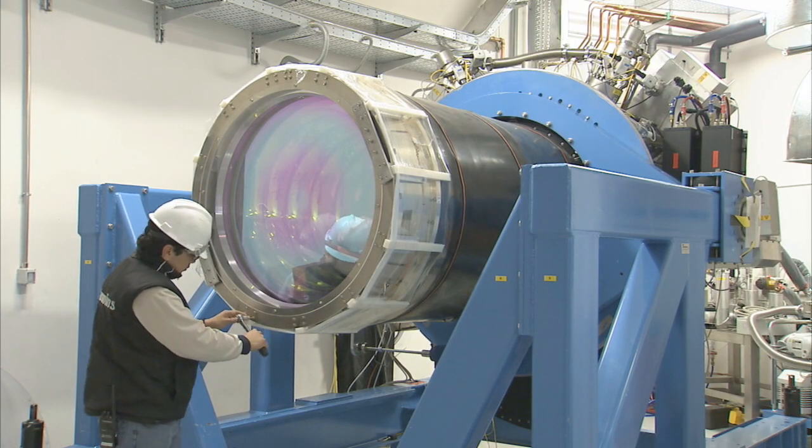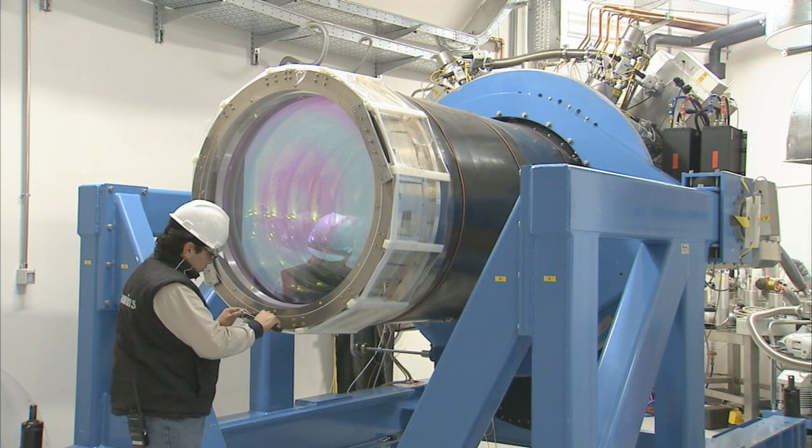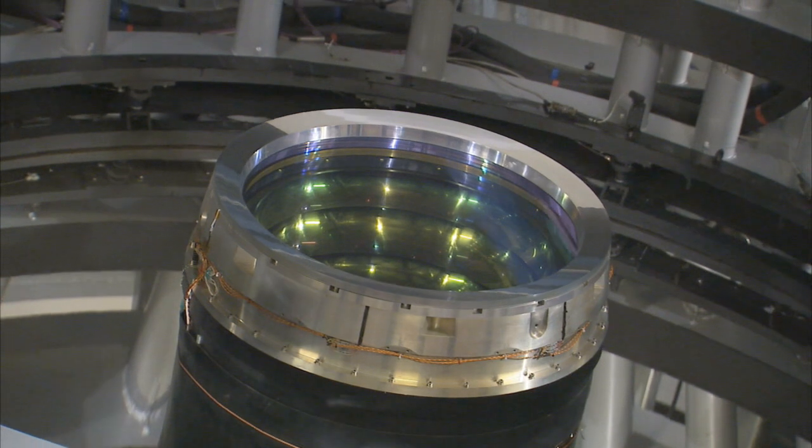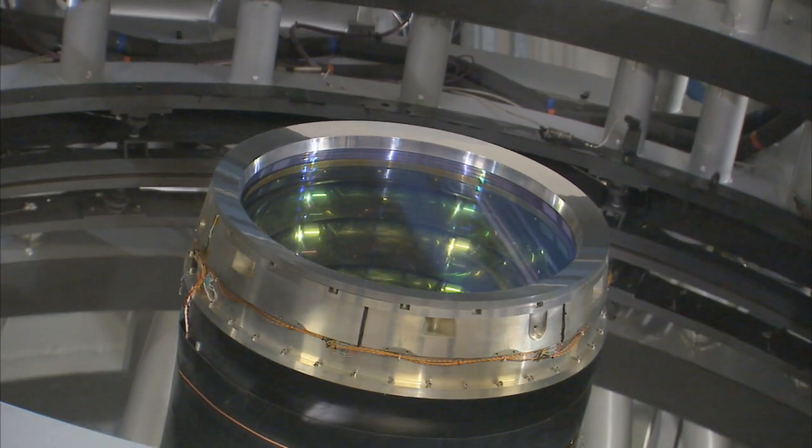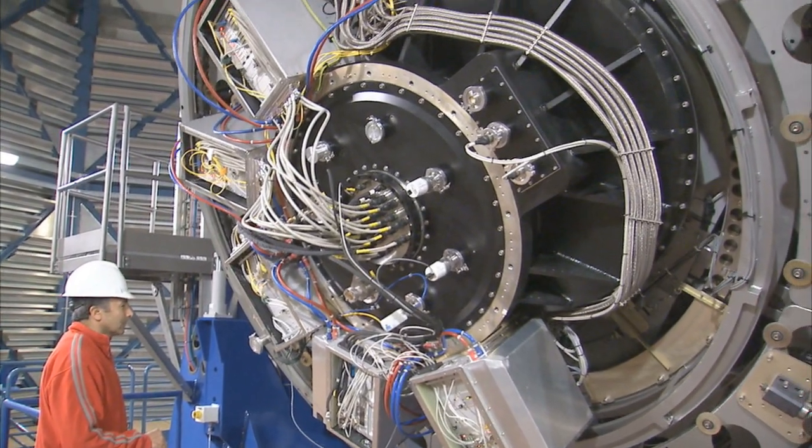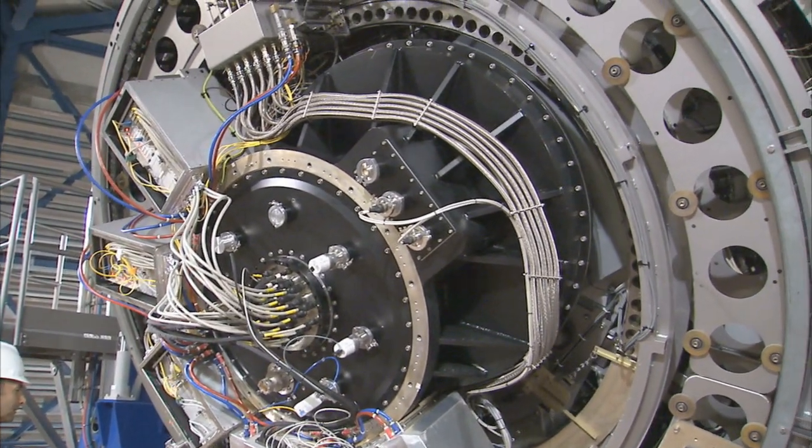At the heart of VISTA is a 3-ton camera containing 16 special detectors sensitive to infrared light with a combined total of 67 megapixels. This huge instrument provides the widest sky coverage of any astronomical near-infrared camera.